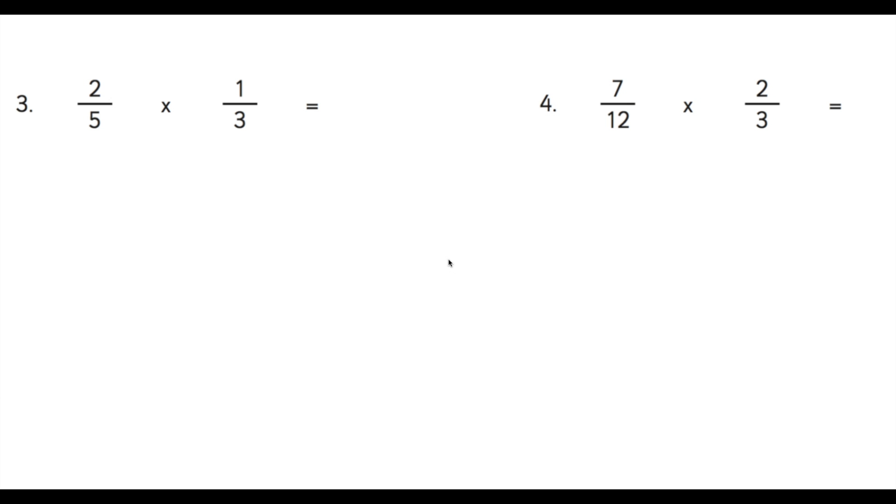For the next example, it's exactly the same. 2 fifths multiplied by 1 third—we start with the numerator: 2 times 1 is 2. 5 times 3 is 15. We can't simplify that any further, so our answer is 2 fifteenths.